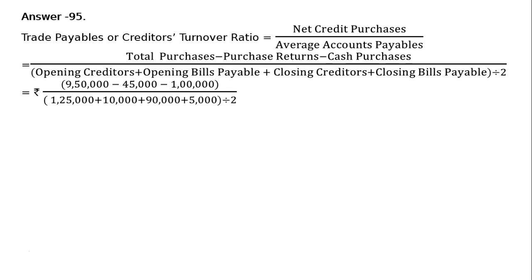Whole divided by rupees 1 lakh 25,000 plus rupees 10,000 plus rupees 90,000 plus rupees 5,000, whole divided by 2. That is equal to rupees 8 lakh 5,000 divided by rupees 2 lakh 30,000 by 2.